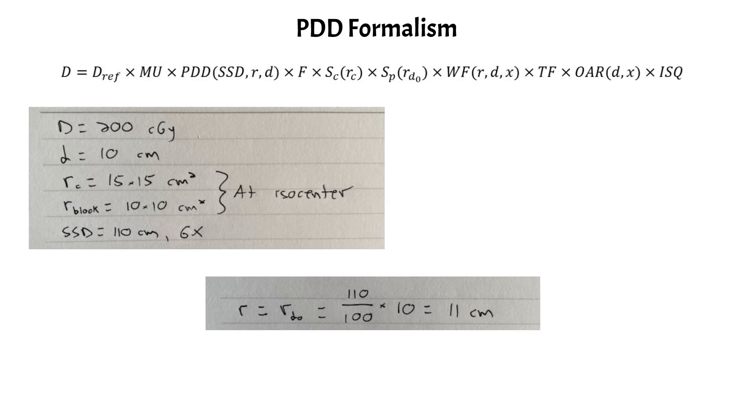And I also write down that RD naught, which is what we use for the phantom scatter factor, is just going to be equal to the field size at the surface, because that's the field size that was used to define the normalization point of the PDD for this beam.